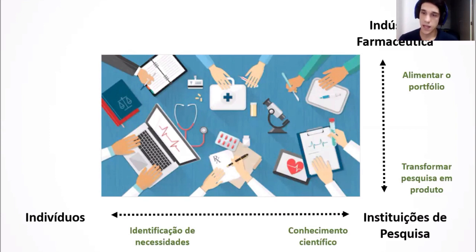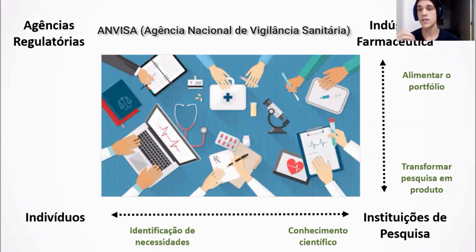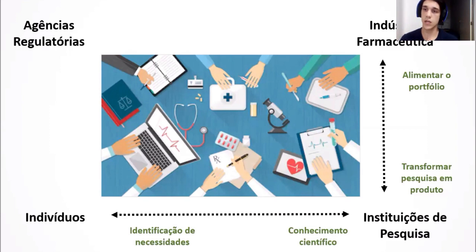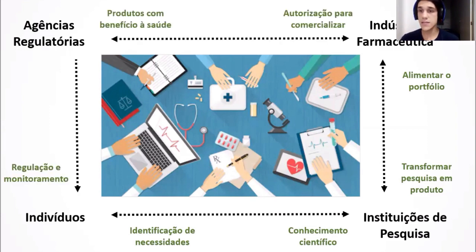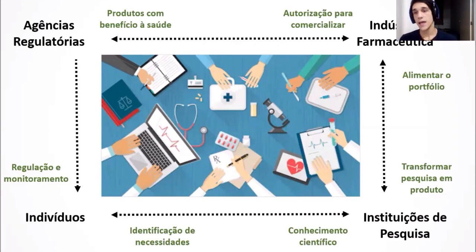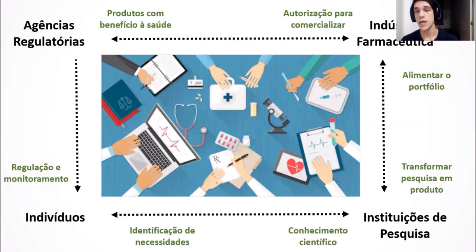Uma vez que a indústria tem um produto para oferecer, ela precisa passar pelo quarto agente: a agência regulatória. Aqui no Brasil temos a Agência Nacional de Vigilância Sanitária, a Anvisa. Nos Estados Unidos tem a FDA, que é a maior e a mais famosa delas. Quando a indústria farmacêutica fornece um produto para a agência, antes que possa comercializá-lo, a agência precisa revisar, analisar e julgar esse produto para ver se ele atende às necessidades para ser comercializado. A agência vai julgar todo o material de desenvolvimento e oferecer à indústria a autorização para comercializar aquele produto, se estiver dentro das especificações.